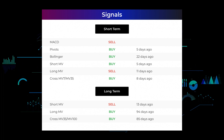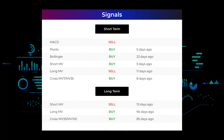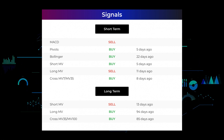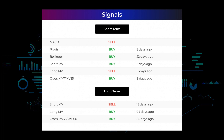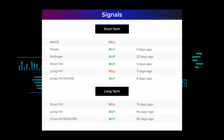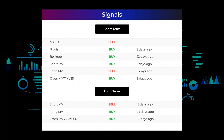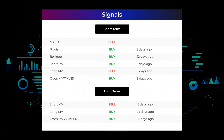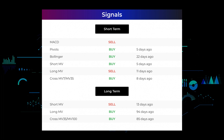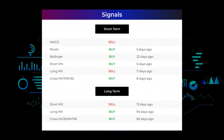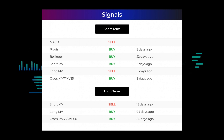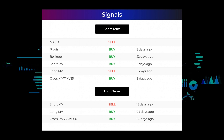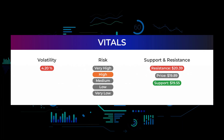Here are some other signals: MACD holds a sell signal. Pivots gave a buy signal five days ago. Bollinger gave a buy signal 22 days ago. The short-term moving average for the three-month chart gave a buy signal five days ago. The long-term moving average for the three-month chart gave a sell signal 11 days ago. The relation between short and long moving averages in the three-month chart gave a buy signal eight days ago. On the 12-month chart, the short moving average gave a sell signal 13 days ago, the long-term moving average gave a buy signal 94 days ago, and the relation between the two gave a buy signal 85 days ago.